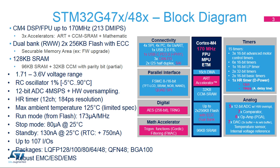The block diagram for STM32G47X devices is provided here for reference. The STM32G47X line offers a variety of communication assets, a rich set of analog peripherals, a practical crystal-less USB 2.0 FS interface, USB-C power delivery functionality, and up to 107 GPIOs.